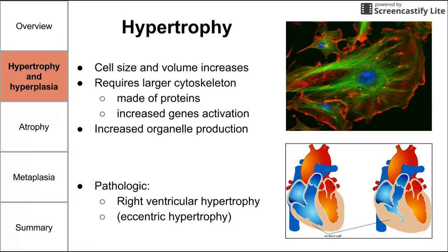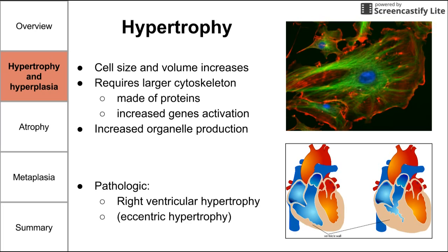In order to have hypertrophy, the cell volume needs to physically increase. In a normal animal cell, a protein structure known as a cytoskeleton is what holds up the cell membrane to maintain cell shape and rigidity. This is a microscope image of cells where the cytoskeleton components are stained red and green, and you can see how they stretch out the plasma membrane and define the cell size and volume. To increase the cell size, this cytoskeleton needs to become bigger. Because the cytoskeleton is made up of protein, the process of hypertrophy requires increased protein production, which means the activation of more genes to synthesize those proteins. A larger cell also requires more organelles to produce ATP, remove wastes, synthesize molecules, and do everything else that organelles do — so organelle production increases during hypertrophy as well.